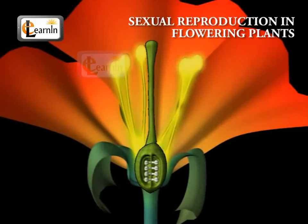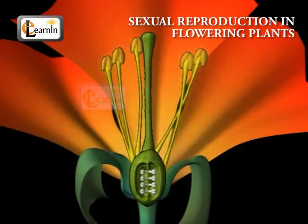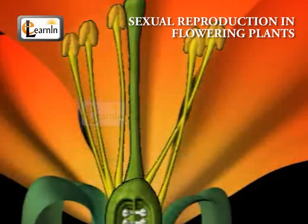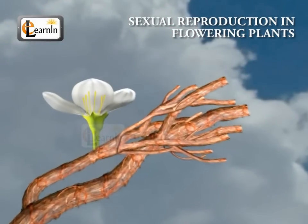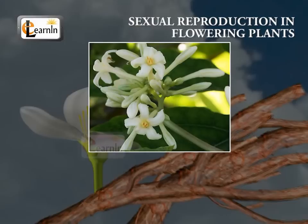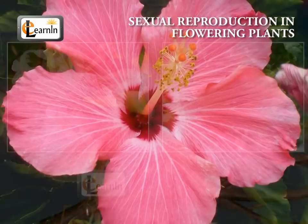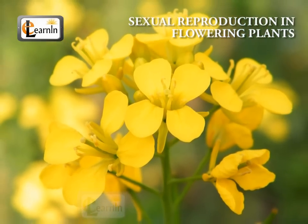There are different parts of a flower, which include sepals, petals, stamens, and carpels. Stamens and carpels are the reproductive parts of the flower, which contain the germ cells. The flower may be unisexual, like in the case of the papaya or watermelon, which contain either stamens or carpels, or bisexual, as in the case of hibiscus or mustard, which contain both stamens and carpels.